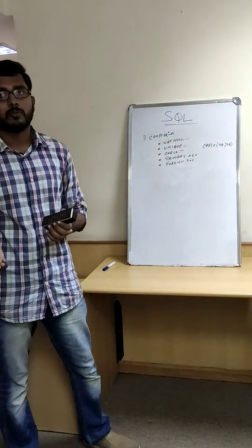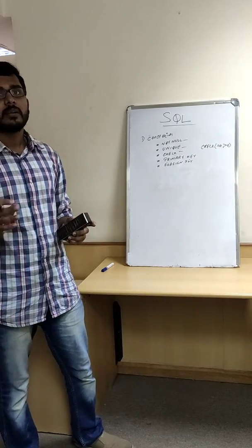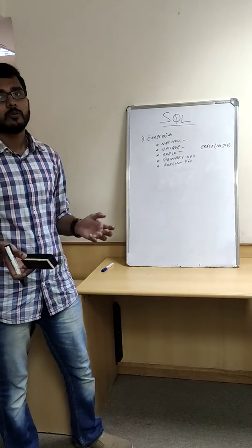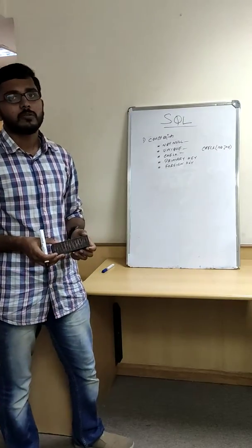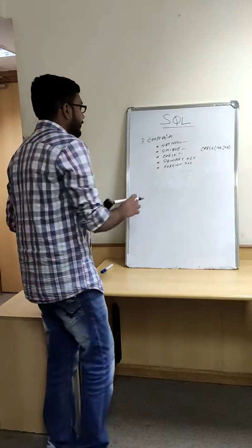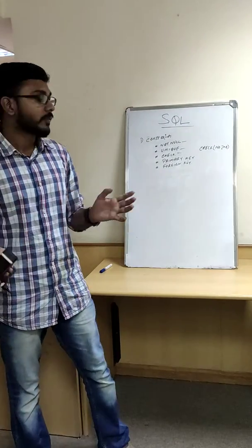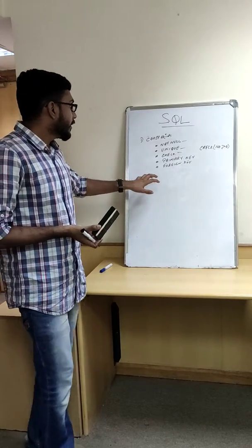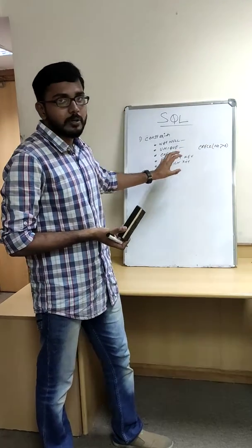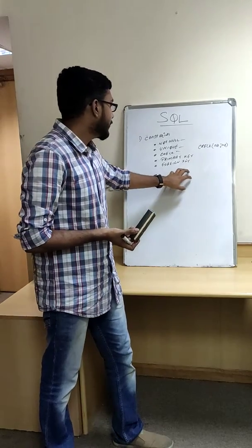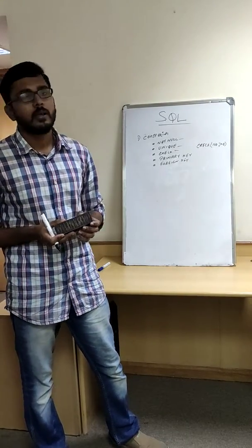For example, I can give check number should be greater than zero, where this number is a column name and the element which is present inside the number should be greater than zero. Primary key is nothing but is a combination of not null value and unique. This primary key is mainly present in the parent table. And it is not mandatory like whether we have to mention primary key inside the table. If we are not mentioning also, it is not a total problem, but it is mostly preferred. And foreign key is mainly used to establish a connection between the two tables. This foreign key will act as a parameter to establish connection between this parent table and this child table.